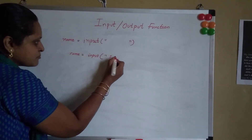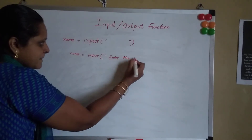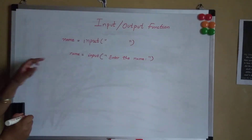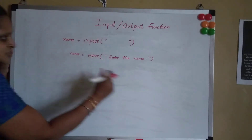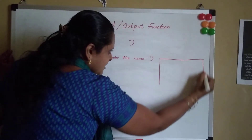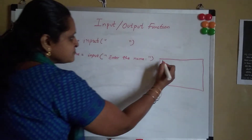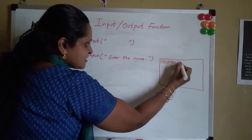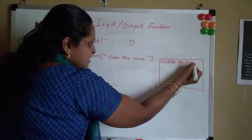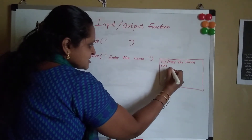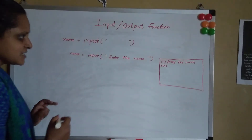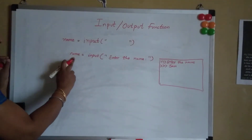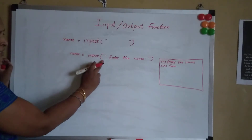For example, if I say name = input("Enter the name"), when Python encounters the input function in the IDLE or any other Python IDE, the message 'Enter the name' will be displayed on the screen and it waits for the user's data. So if the user enters SAM, then SAM will be stored in the variable name.